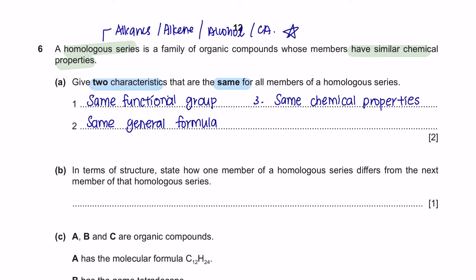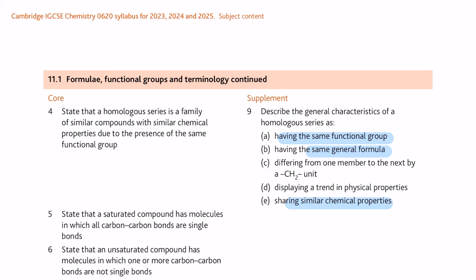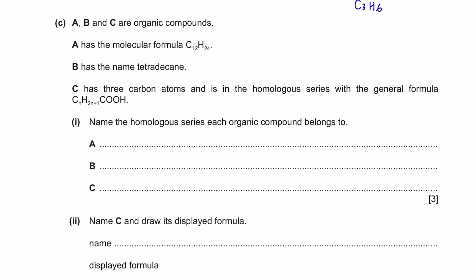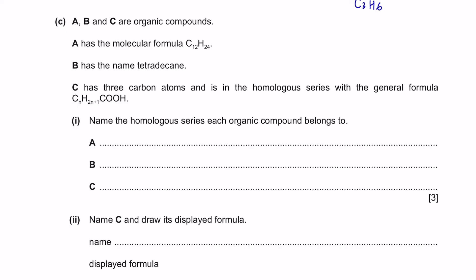Next, question B. In terms of structure, state how one member of a homologous series differs from the next member of that homologous series. Let's use an alkene as an example. The first carbon alkene will be CH2, the second carbon alkene will be C2H4, and then it's going to be C3H6. From one member to another member, the difference here is CH2, and this happens for all homologous series. You will also see in your course specification that it differs from one member to the next by a CH2 unit. All these questions seem pretty straightforward so as long as your theory is good, you will be able to answer these questions easily.